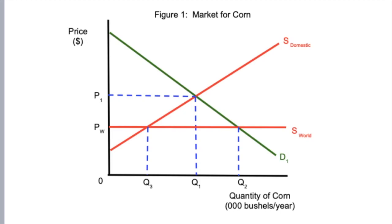We start off with the base diagram for international economics, which is the free trade diagram, composed of Price with dollar sign, P1, PW0, Q3, Q1, Q2, the quantity of corn in thousands of bushels per year. We have Figure 1 Market for Corn, always label it figure one. We have our domestic supply curve, domestic demand curve, and our world supply curve.